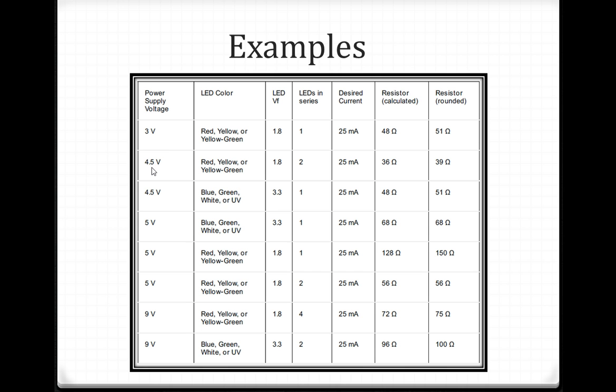My supply voltage is 4.5V. LED color I am using could be red, yellow, or yellow-green. VF is 1.8V. Two LEDs in series, 25mA. Resistor calculated is coming out 36 ohms, and the desired is 39 ohms. In the next slide, I will show you how that 36 and 39 were calculated.